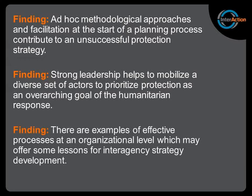Seventh finding under process: there are examples of effective processes at an organizational level which may offer lessons for interagency strategy development. Although we struggled to find good examples at the interagency level, we identified organizations with effective methodologies — workshops carried out over several days engaging field staff all the way down to community mobilizers and volunteers, using participatory techniques to facilitate open discussion. These examples can help us learn and inform protection strategy at an interagency level.